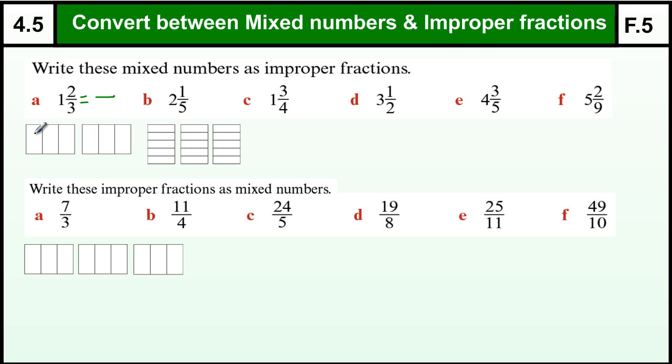Now if we look at 1 and 2/3, well, this box we consider to be 1. And if we color in 2/3 of this box, so there is 1/3 and 2/3, well, in the 1 we have 3/3. That is what happens when you split a block up into thirds. So we have 3/3 there, plus these 2, that makes 5/3.